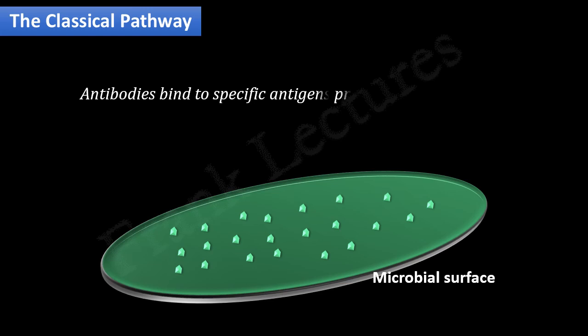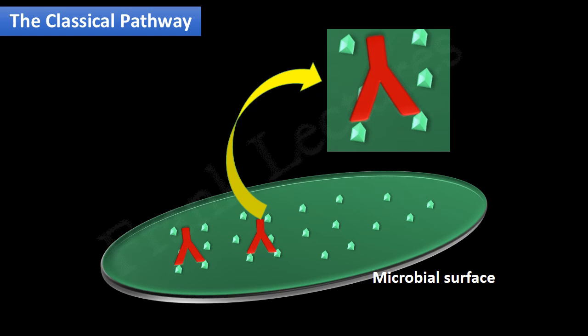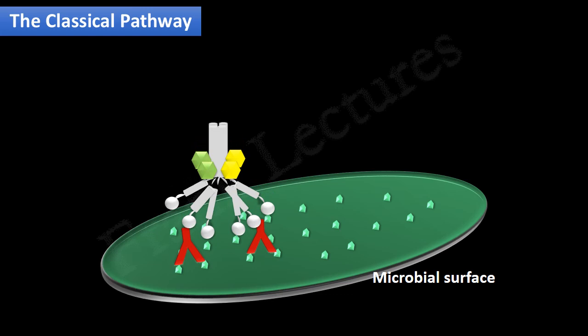The pathway begins when antibodies bind to their specific antigens on the surface of the pathogen. Antigen-antibody complexes are formed, and now the antigen-binding sites are occupied by the antigens. What is free in this antibody molecule is the FC region, so now the C1 complex comes and binds to the FC region of the antibodies.